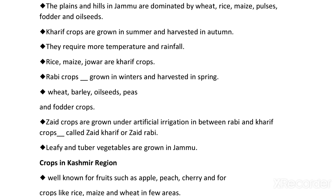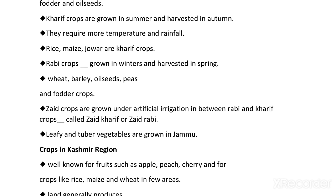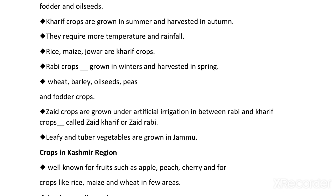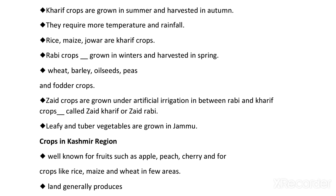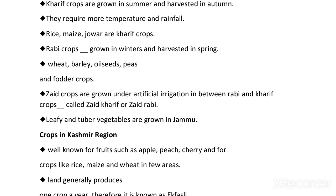Zat crops are also grown in Jammu region. Zat crops are those crops which are grown under artificial irrigation in between the rabi and kharif crops. They are also called Z-Kharif or Z-Rabi. Leafy and tuber vegetables are grown as Zat crops in the Jammu region.